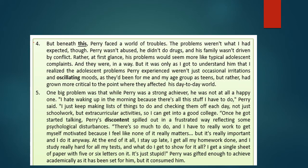But beneath this, Perry faced a world of troubles — and he was just 15. The problems weren't what had been expected: Perry wasn't abused, he didn't do drugs, and his family wasn't driven by conflict. Rather, at first glance, his problems would seem like typical adolescent complaints. But as the narrator got to understand him, he realized Perry's problems weren't just occasional irritations and oscillating moods — meaning moods moving up and down — as they had been for most teens. Rather, they had grown more critical to the point where they affected his day-to-day world.